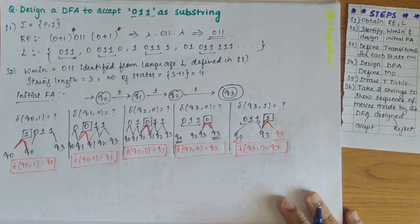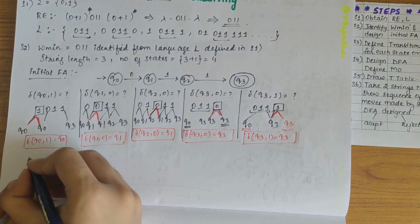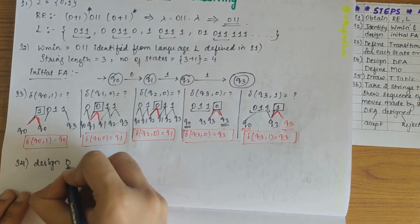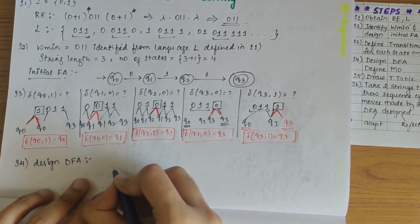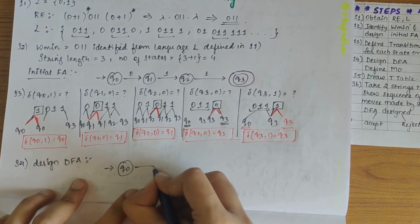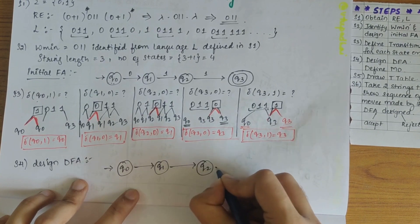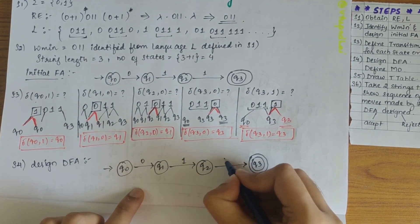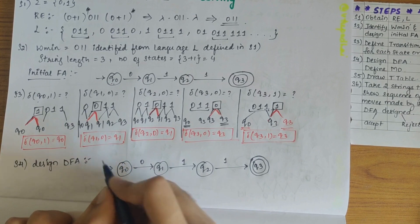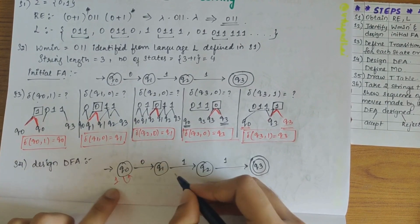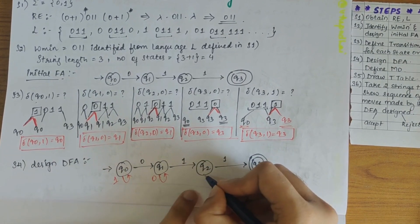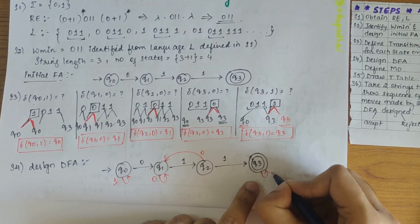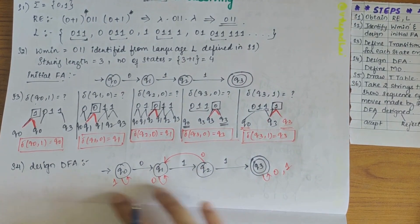Now that we have found the transitions of all the states, let's move on to step 4 — designing the DFA. We write the initial FA with states Q0, Q1, Q2, Q3, and the transitions 0, 1, 1 along the main path. The additional transitions (shown in red) are: Q0 on 1 gives Q0, Q1 on 0 gives Q1, Q2 on 0 gives Q1, Q3 on 0 gives Q3, and Q3 on 1 gives Q3. So the DFA is now designed.